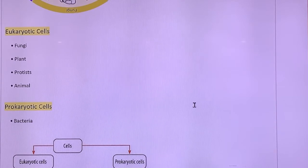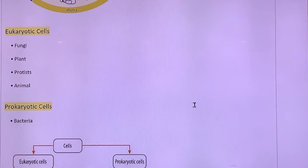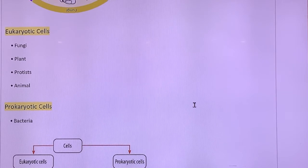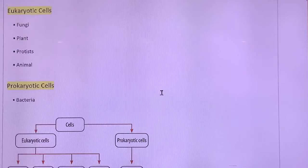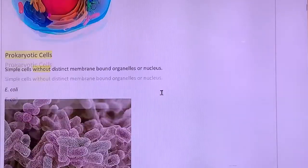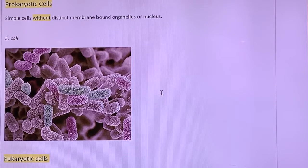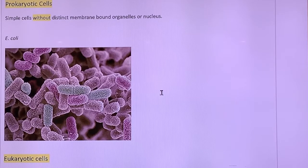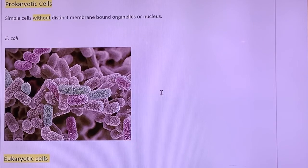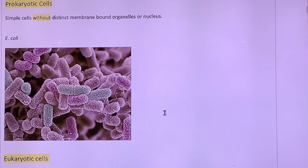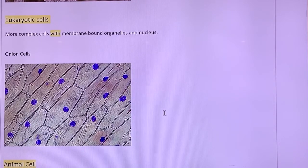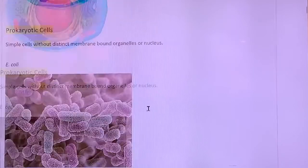The major difference is eukaryotic cells we consider more complex. You've got fungi, plants, protists and animals. So our cells are eukaryotic. Prokaryotic cells are things like bacteria. They are simpler. Prokaryotic cells are simple cells without distinct membrane bound organelles. So our cells have a nucleus and mitochondria and Golgi bodies and all those things. Prokaryotic cells don't have all of those. Eukaryotic cells have all those membrane bound organelles. So they're more complex.